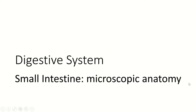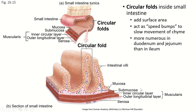Now let's continue with the small intestine and learn about the microscopic anatomy, or the histology. The walls of the small intestine — the mucosa — are folded into what we call circular folds.